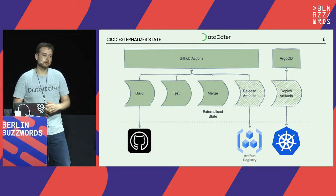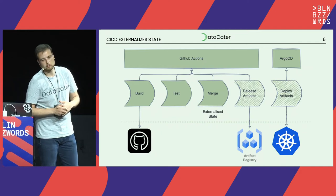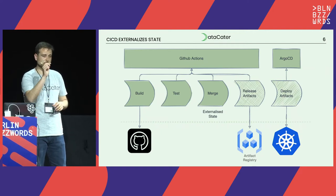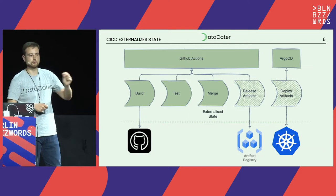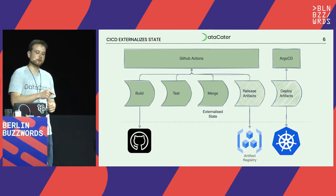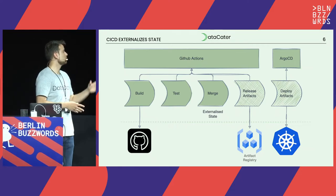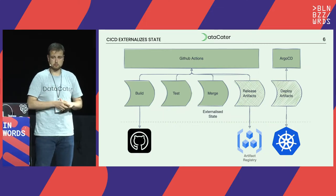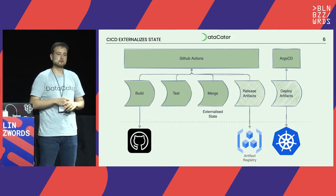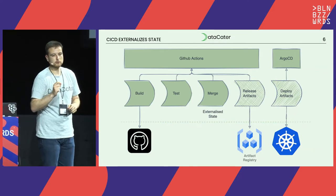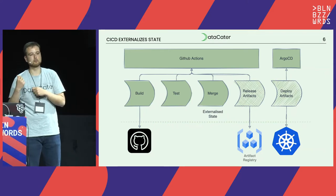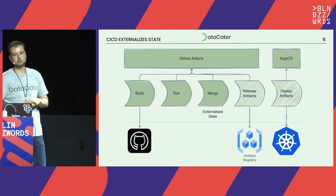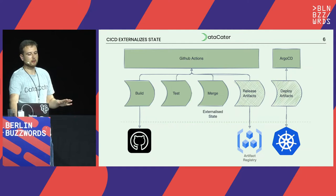For build, test and merge, everything usually is in your source control management system — for us, again, it's GitHub. There you have your code and usually your CI pipeline pushes something like a tag or fixes a hash where you know your release artifact was built by this exact Git hash. The state for this whole workflow for all the compute and CI/CD is in your source control management. Your state for your artifacts is in your artifact registry — it could be any cloud provider or JFrog. And when you deploy artifacts, tools like Argo CD put metadata onto your Kubernetes resources, exchange information on when the last update was and which Git hash was used. State is completely externalized.